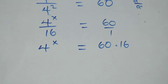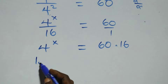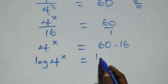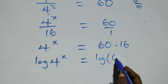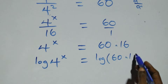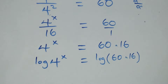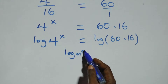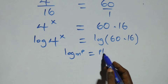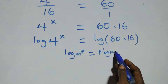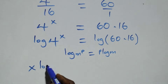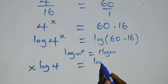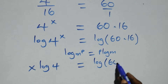From here, we take the log on both sides. We have log of 4 raised to power x equals log of 60 times 16. We apply the power rule of logarithms: when we have log m raised to power p, this is the same as p log m. So we have x log 4 equals log of 60 times 16.